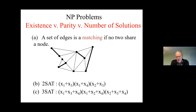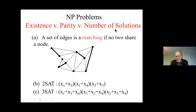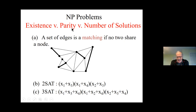Once I give you an NP problem, you can ask various questions: does there exist a solution? Is there an odd or even number of solutions? And the harder one: how many solutions are there? Finding the number of solutions is always at least as hard as existence, because if you know the number you know whether it's zero or more. And knowing the number tells you parity, though the connection between existence and parity can be more complicated.